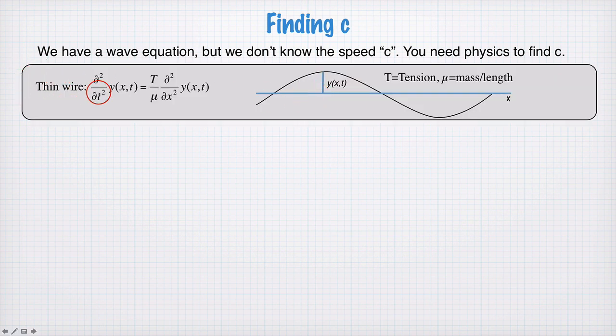So for a thin wire or a string, you can imagine a guitar string or a slinky, we have some sort of transverse wave motion here. The displacement from equilibrium is given by y as a function of x and t.